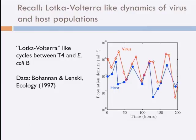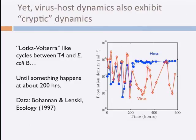Same data set, 10 days of the experiment. Now let me show you the rest of the experiment. This is virus-host microbial population dynamics, now over about 600 hours. What did they do at time 200 hours? This is the same setup — E. coli B and phage T4 — and if you notice, there's obviously a big difference between the dynamics before 200 hours and after 200 hours.